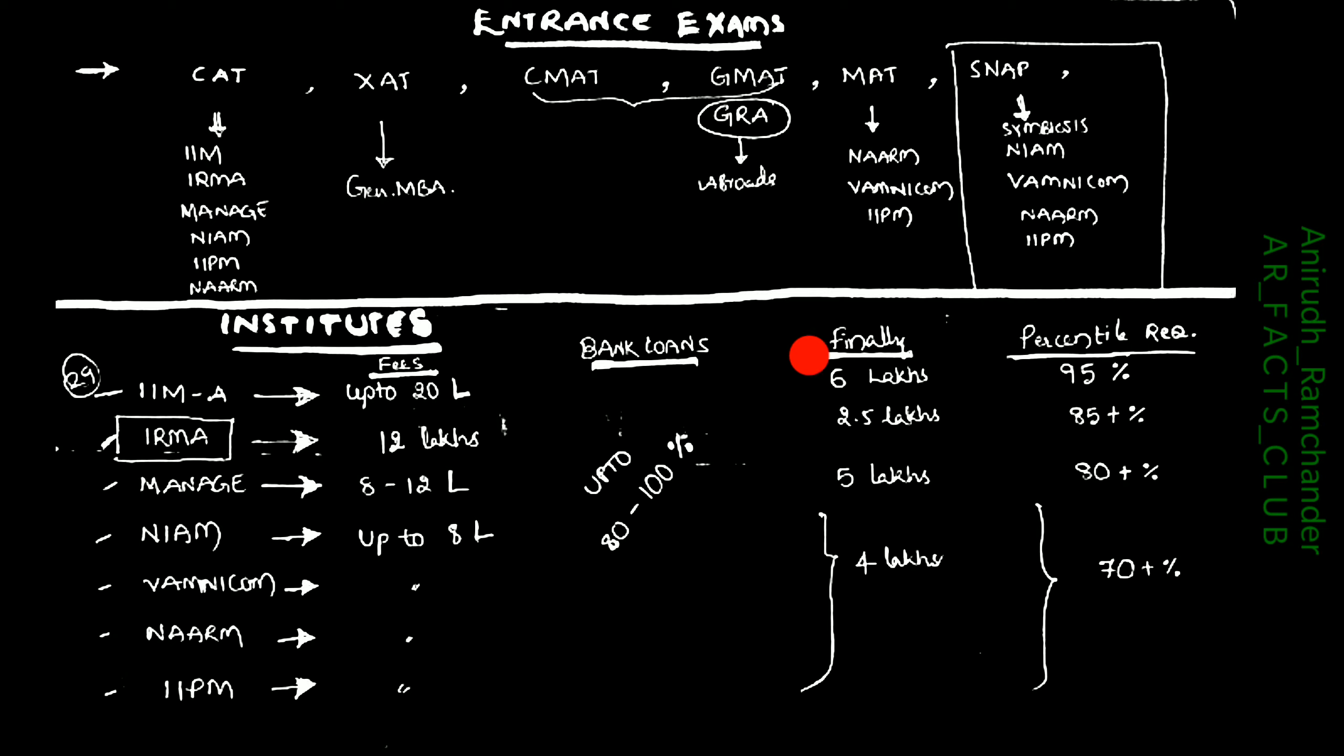Finally, you need to handle around 6 lakhs, 2.5 lakhs for IRMA, 5 lakhs for MANAGE, and 4 lakhs for others. 95 is the percentile required to get a call from IIMs. For IRMA, you need 85 plus percentile. For MANAGE, you need 80 plus percentile, and all others need 70 plus percentile. These are tentative percentiles and could change year to year. For your knowledge, IRMA is the institute which only holds ABM courses, Agri Business Management, while the remaining could have PGDM and PGABM.